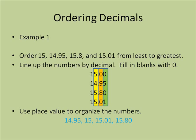As a result, I have now correctly ranked the numbers. The smallest number is 14.95. It is followed by 15, then 15.01, and finally by 15.80.